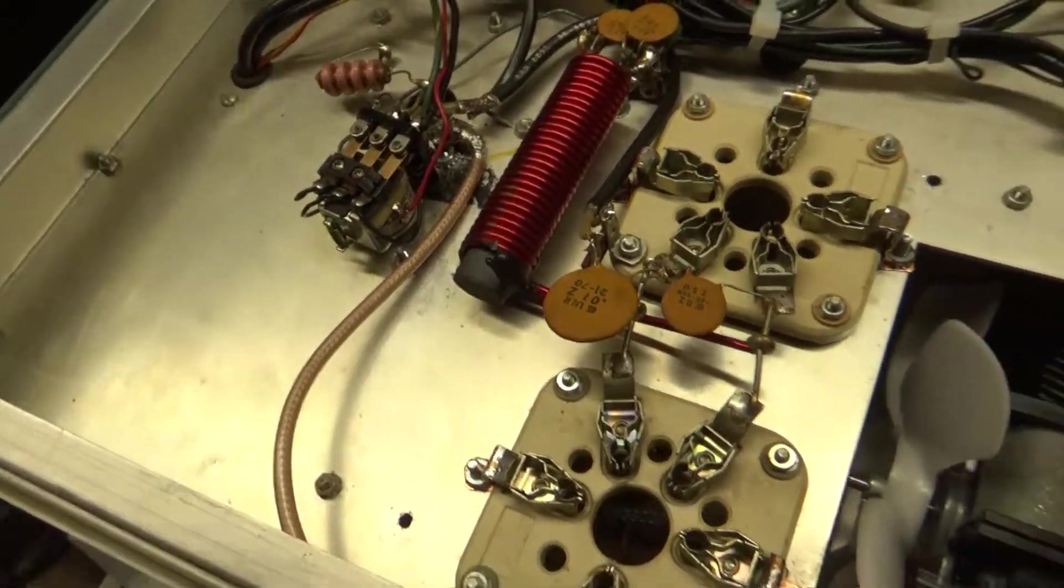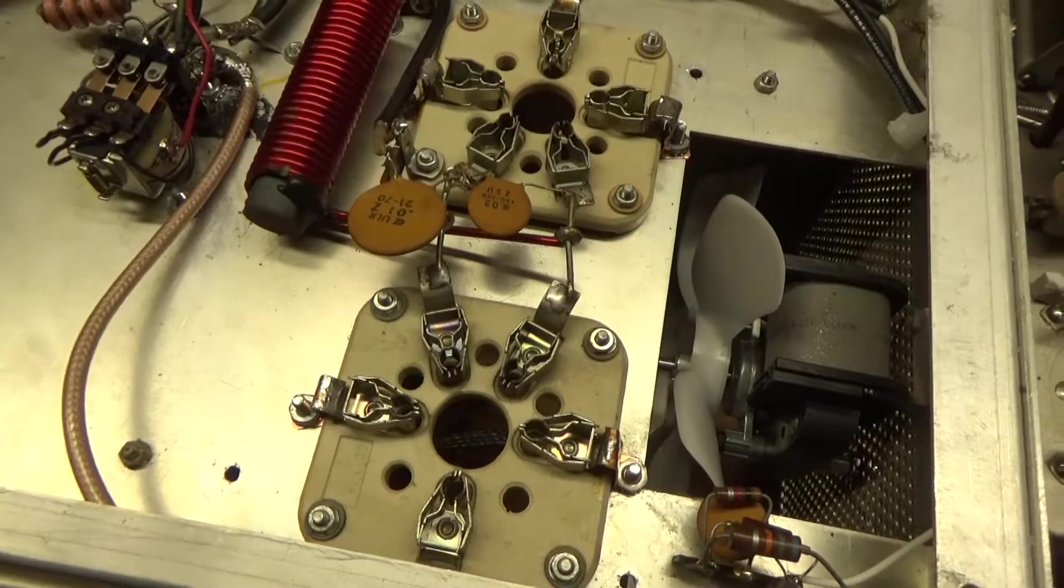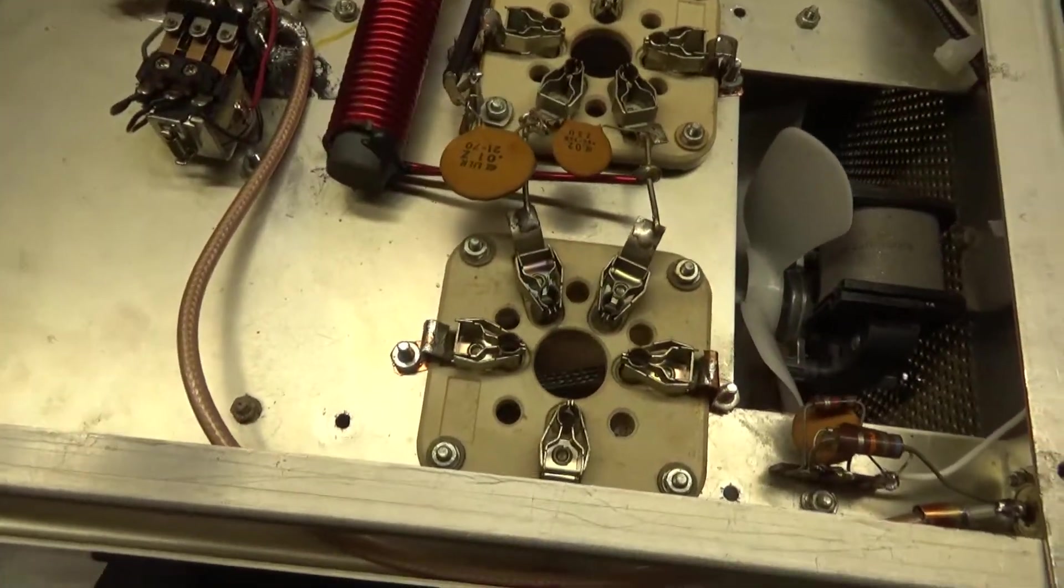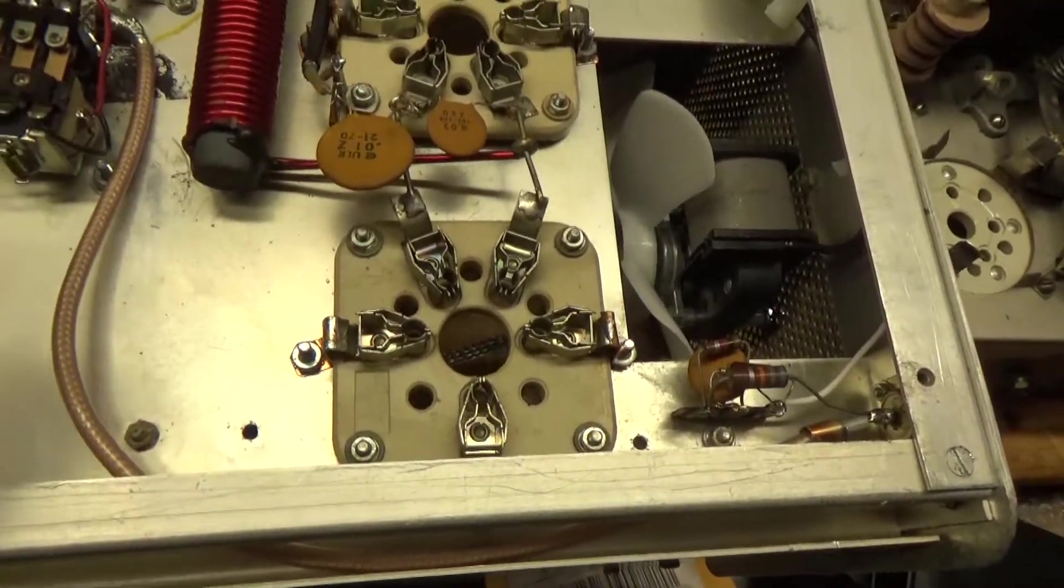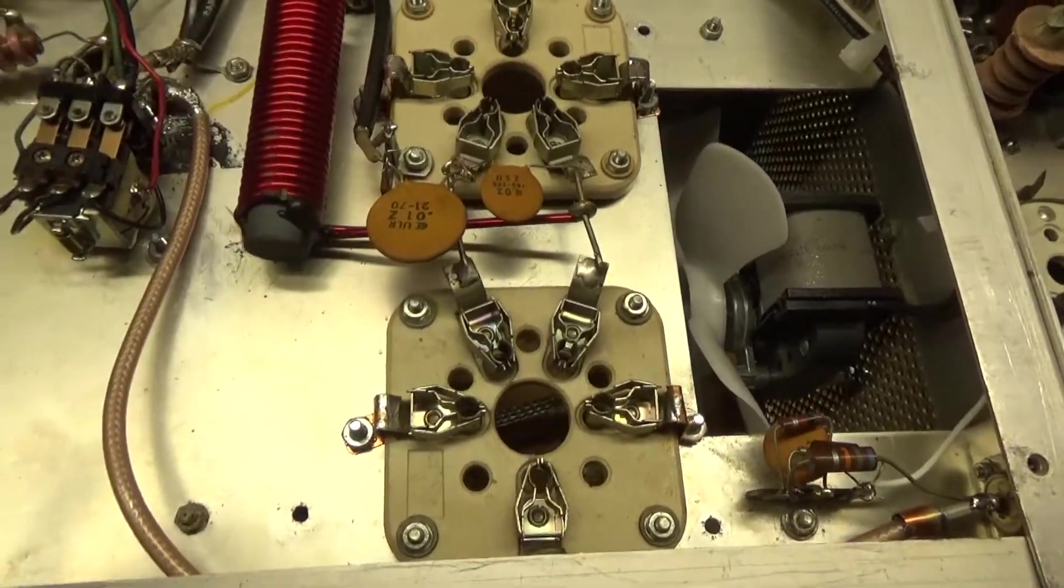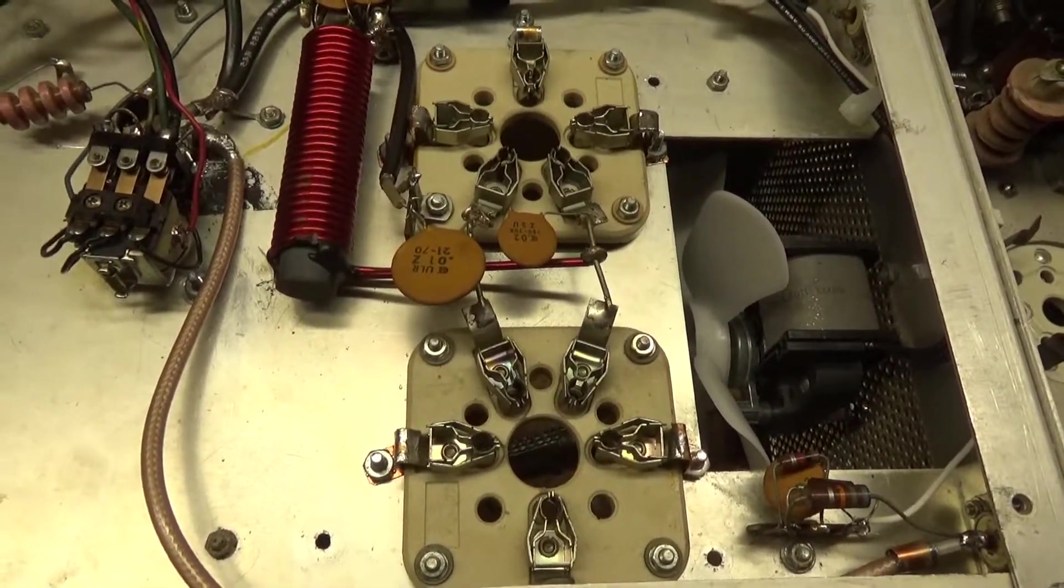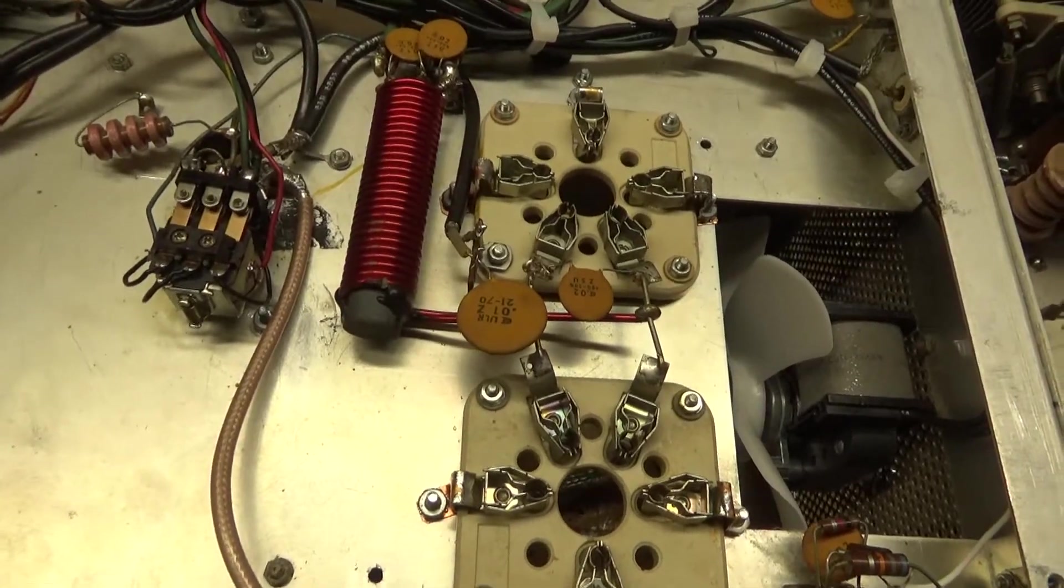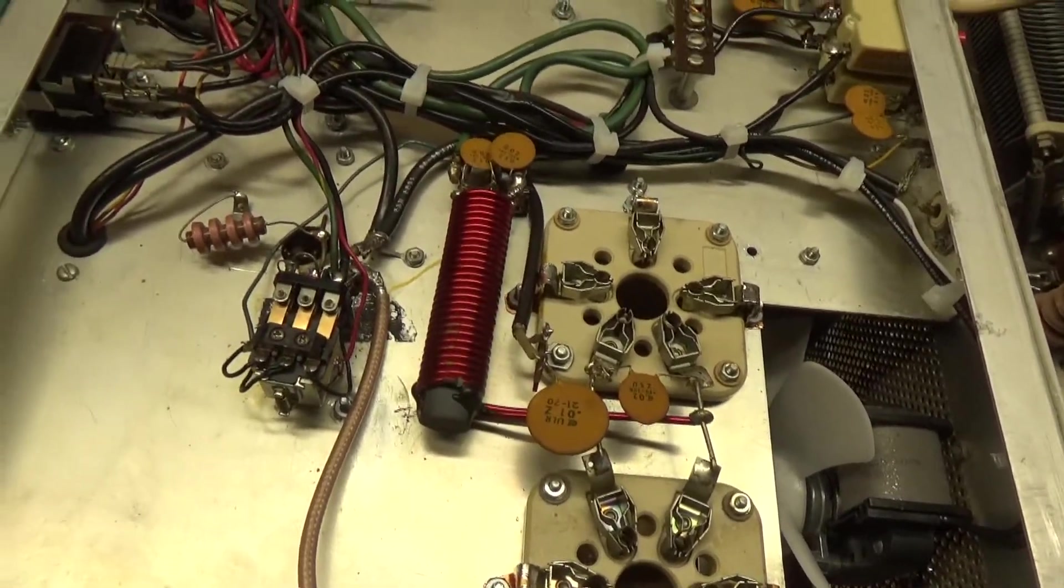I mean, this bias mod is so simple. It saves you from having to replace the filament transformer. Or, you know, if you ground the grids properly it helps prevent parasitic oscillation which could take out the band switch or a tube.